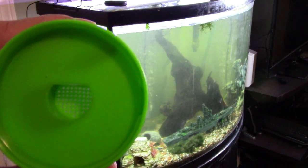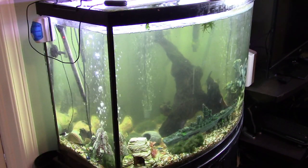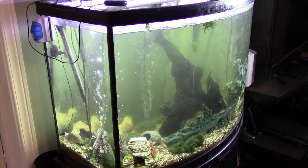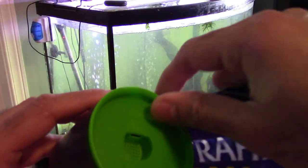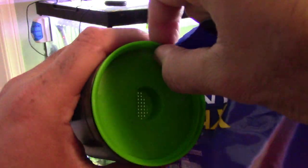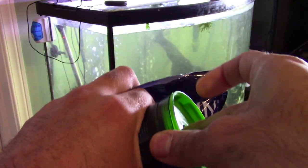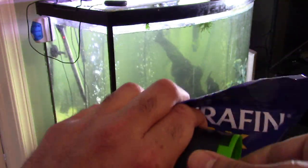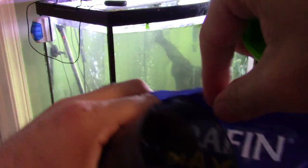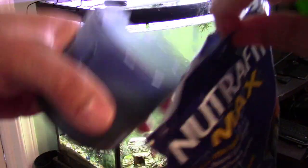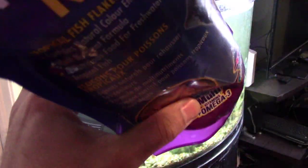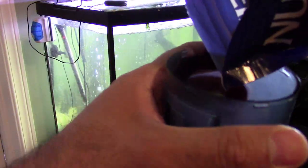So next I'm going to go ahead and remove this part here. Grab my fish food. Pull the little green thing off. Try not to make a mess while I do this.